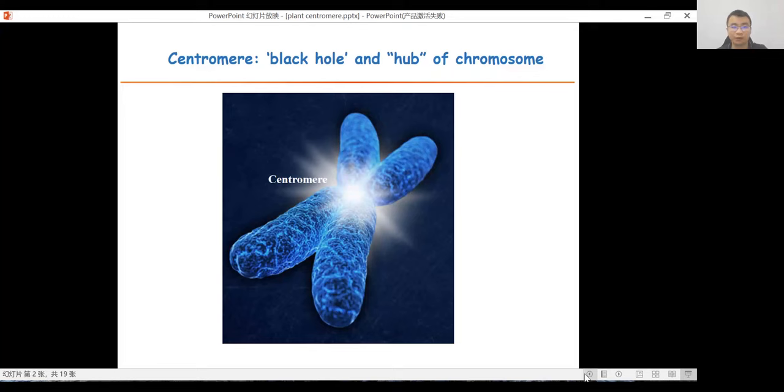Centromeres are the black hole of the chromosome. They contain highly repetitive DNA sequences and most centromeric sequences have not been assembled in the reference genome for most species. Many function studies bypass this region directly. However, centromeres are also the hub of the chromosome, mediating the dynamic behavior of chromosomes during cell division and playing important roles in genomic organization and chromatin regulation.